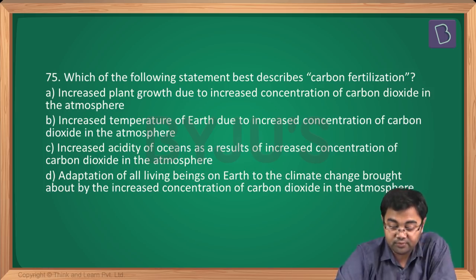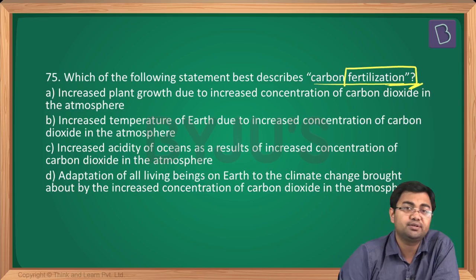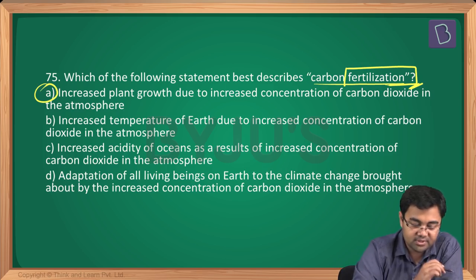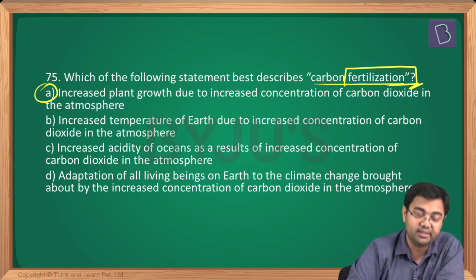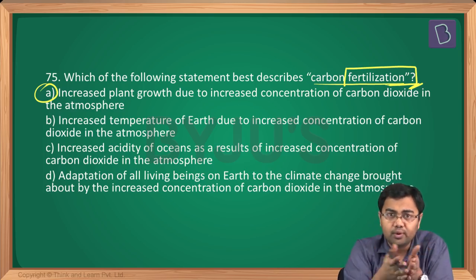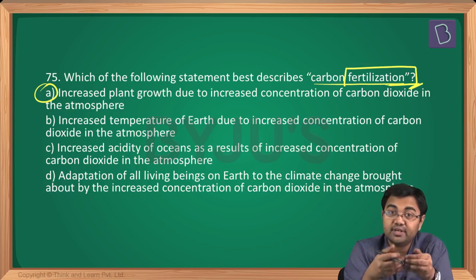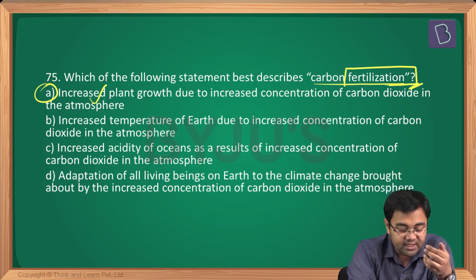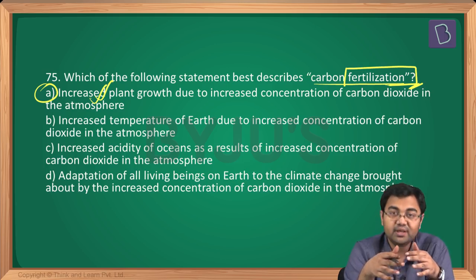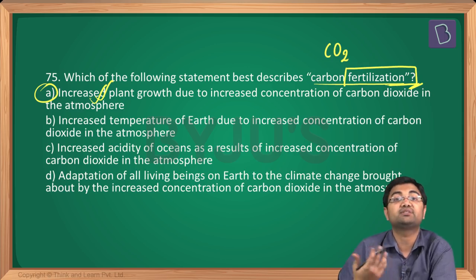Question number 75: which statement best describes carbon fertilization? Even without knowing the term, 'fertilization' points to plant growth. The correct answer is A: increased plant growth due to increased concentration of carbon dioxide in the atmosphere. Due to global warming, CO2 levels are rising; more CO2 available for photosynthesis leads to increased plant growth. This phenomenon is called carbon fertilization or carbon dioxide fertilization.